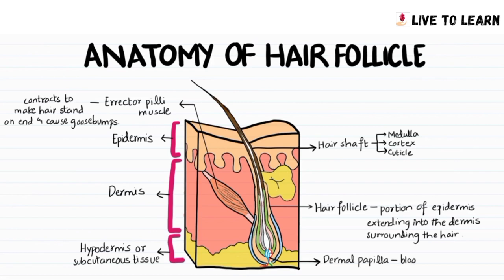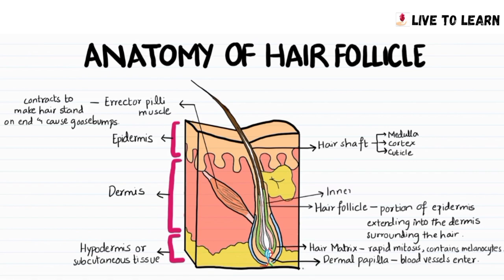The dermal papilla consists of mesenchymal cells, and this is the area where the blood supply comes into the hair follicle. The hair matrix contains keratinocytes undergoing rapid mitosis, as well as melanocytes, which give color to the hair. The inner root sheath helps keep the hair fiber firmly glued into the scalp. The outer root sheath is continuous with the epidermal layer.